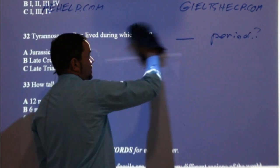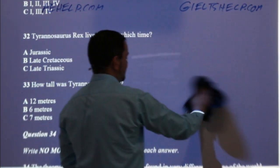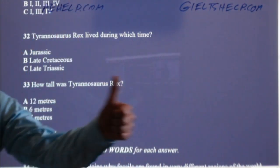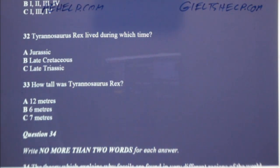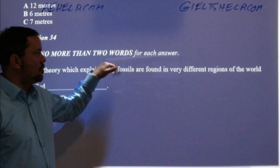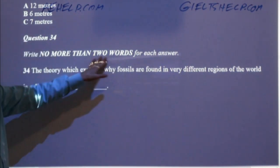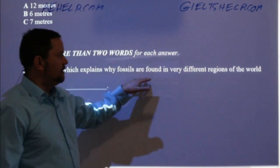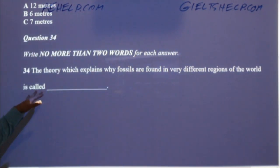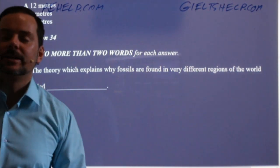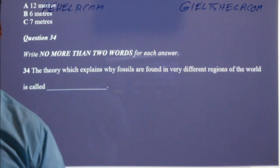Students, if something's not clear, you're unsure — check the transcripts. Question 34 — write no more than two words. The theory which explains why fossils are found in very different regions of the world is called what? It's continental drift. Now, some of you are writing it with big letters, and some with small letters. I think both of these are correct — they would take both. It's called continental drift, so capitalization is okay. But technically this is a common noun, so both forms are acceptable. They will not take marks for that.